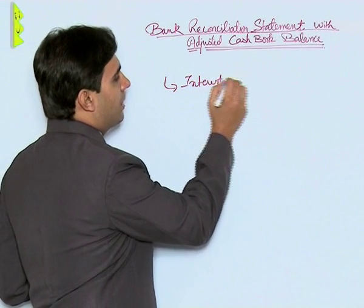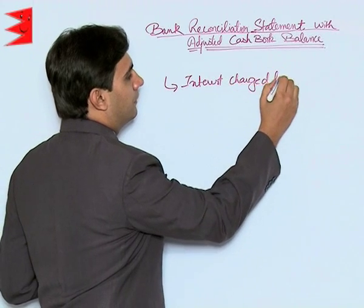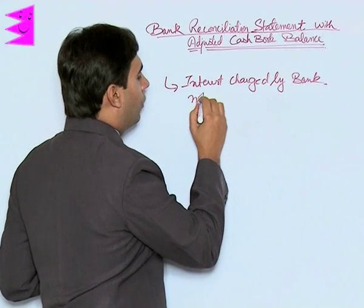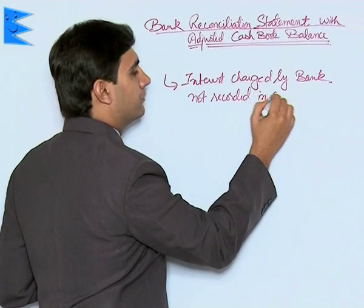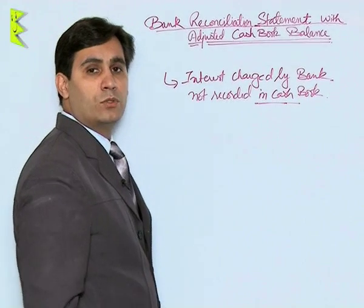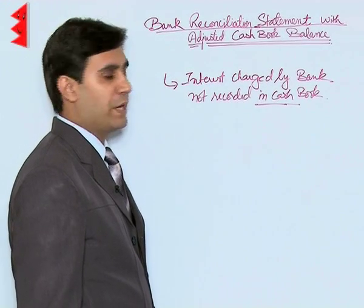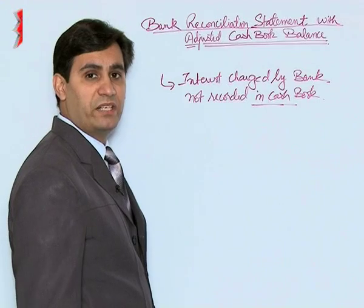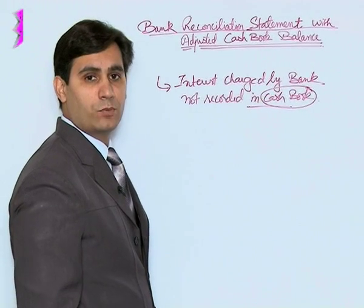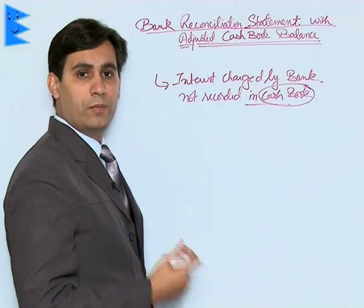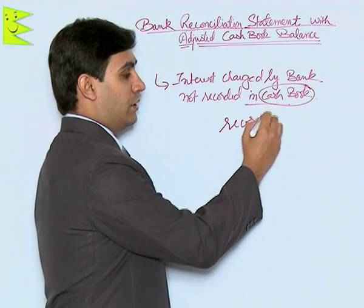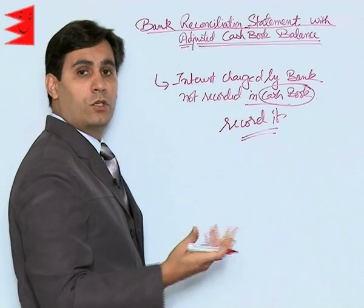Let's take an example: interest charged by bank, not recorded in cash book. This cause obviously leads to a mismatch in the balance shown by the cash book and the passbook, but this is a cause that can be rectified. It clearly shows it should have been recorded in the cash book. The owner or the cashier can immediately record it, and once recorded, the cause of difference is no longer there.